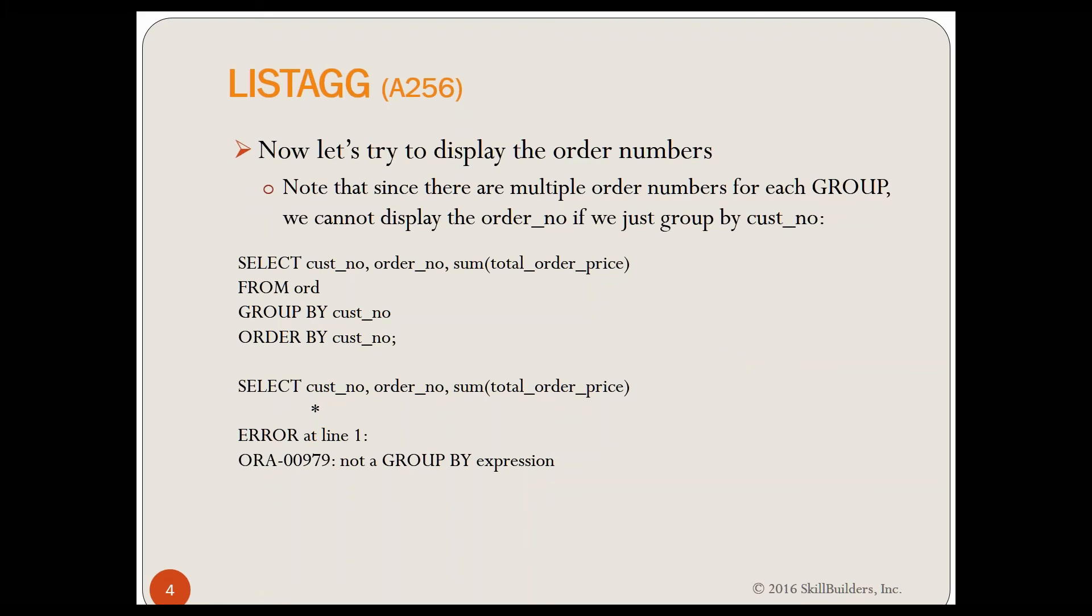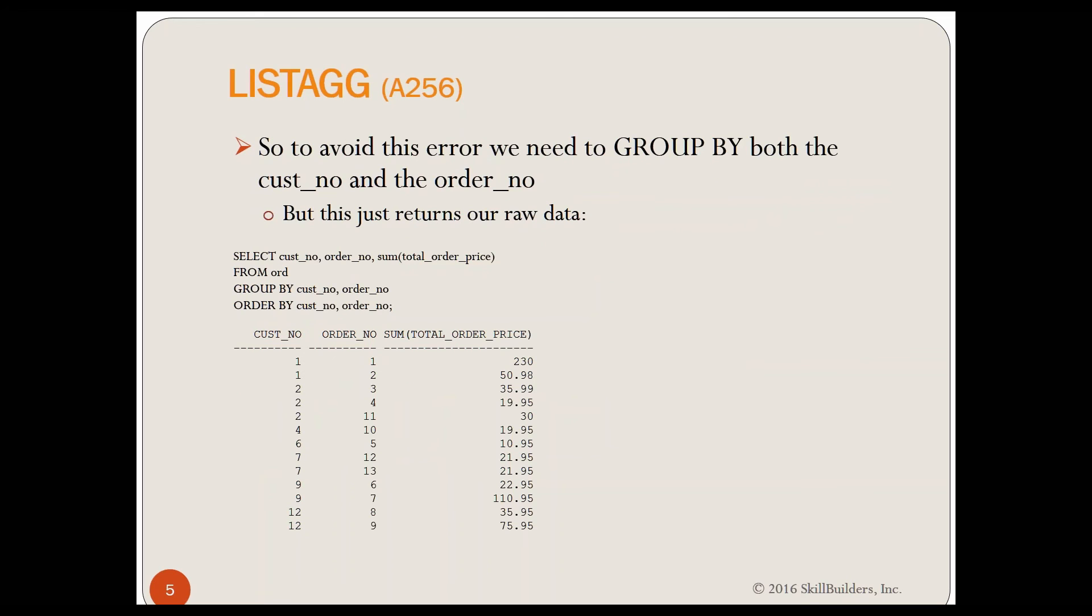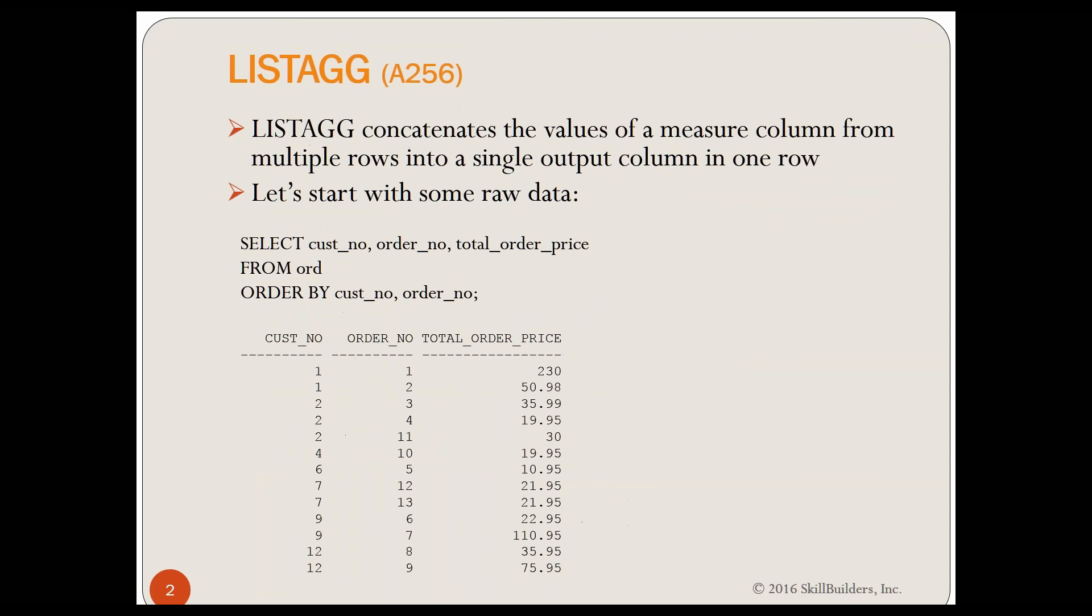So the first thing you might say is, all right, well, I'll GROUP BY CUSNO and ORDERNO, but that's not going to help you at all. When you're grouped by both, what happens? You're back where you started in the very first slide. If I go back here a few slides, I had all the details with no GROUP BY, but I had every order as one row.